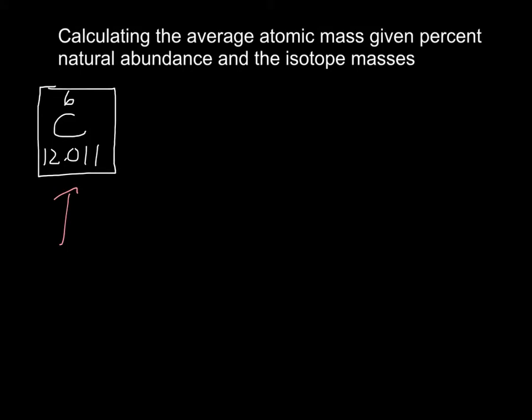And what we need to know is that carbon-12, so the isotope carbon-12, which has six protons and six neutrons, is 98.89% abundant.